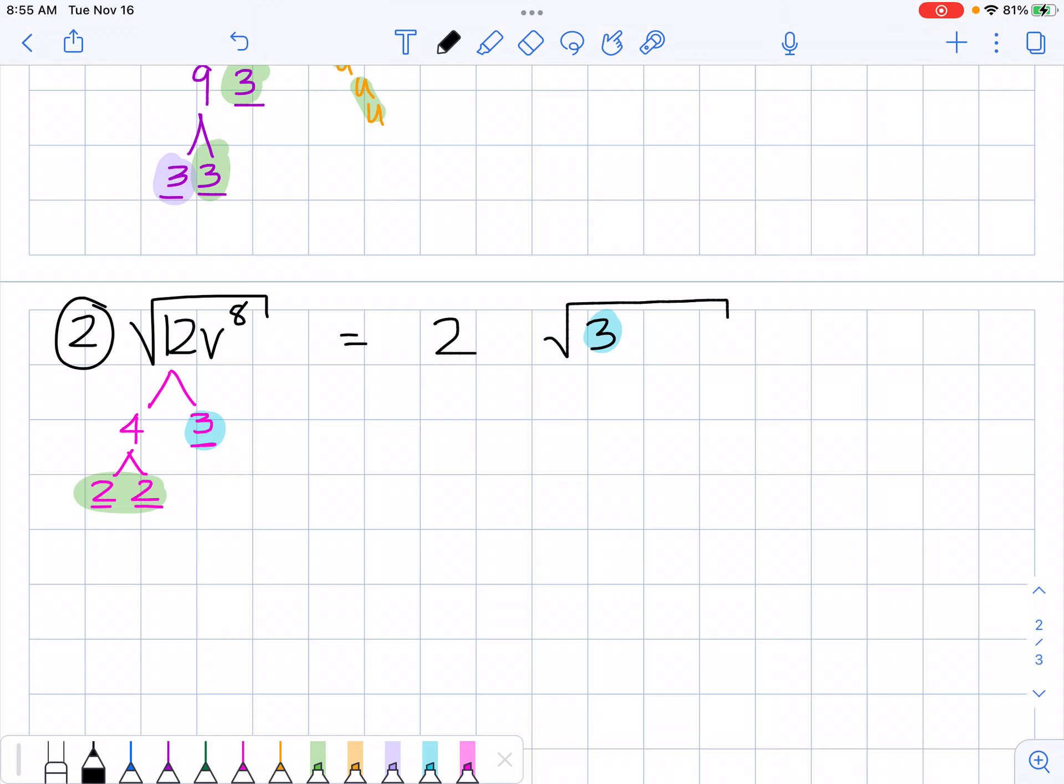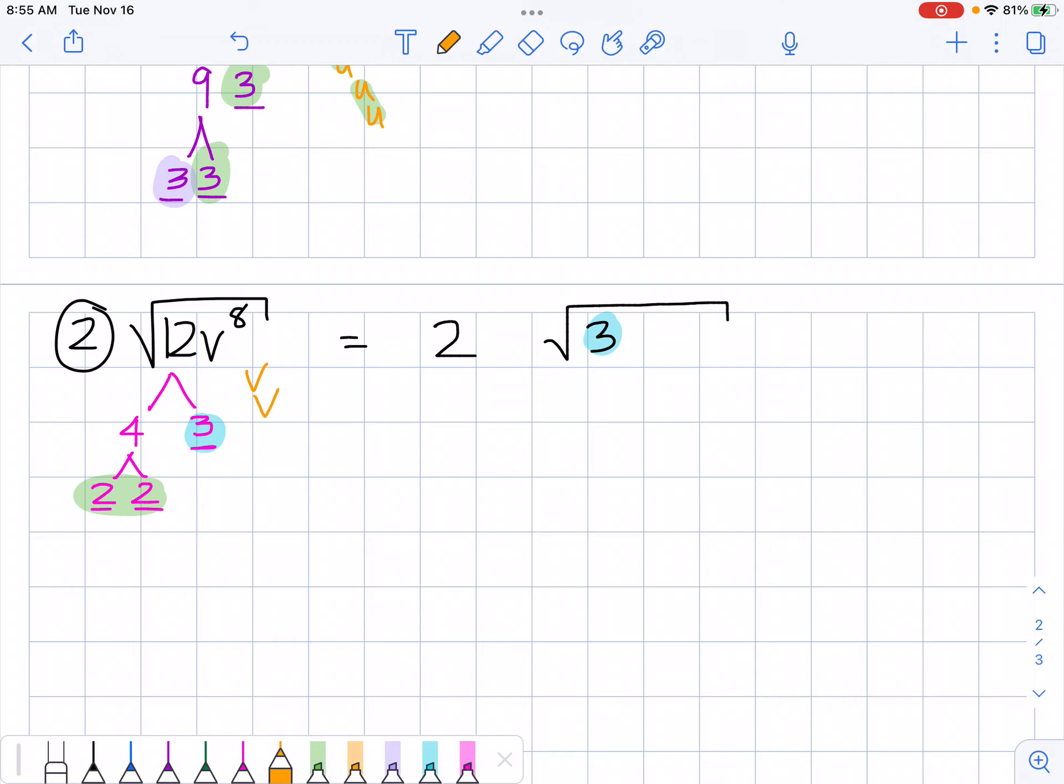Now I have to write my V's out. I got 8 V's: 1, 2, 3, 4, 5, 6, 7, 8. I got 1, 2, 3, 4. I have 4 pairs. So this becomes V to the 4th. I have no leftover V's. So I don't have any V's that go back inside my square root. So my final answer here is 2V to the 4th times the square root of 3.